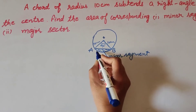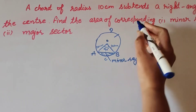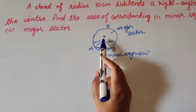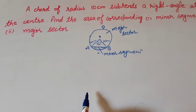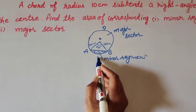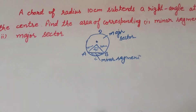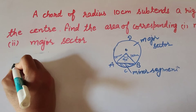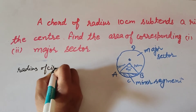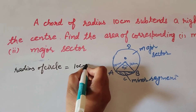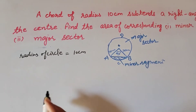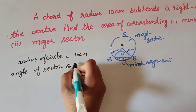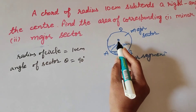O, A, C, B is the minor sector. O, A, D, B is the major sector. We find the area of the major sector and the minor segment. The given values are: radius of circle equals 10cm, and angle of sector, denoted by theta, equals 90 degrees.